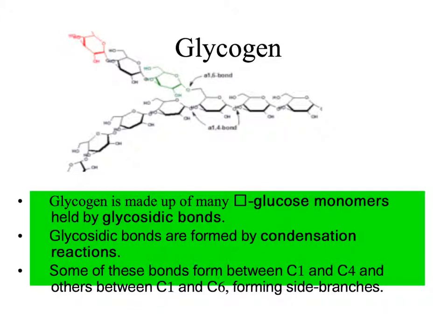Glycogen is another polysaccharide made up of many alpha-glucose monomers, all held by glycosidic bonds formed by condensation reactions. Glycogen is slightly different because it has branches and side chains, which are also glycosidic bonds. This brush-like shape provides lots of free ends for hydrolysis, releasing glucose very quickly for use in respiration to provide ATP. This is important because glycogen is a storage polysaccharide in animals, which are very active and have a high demand for energy, requiring a fast rate of respiration.